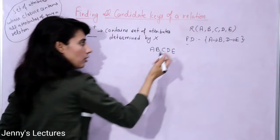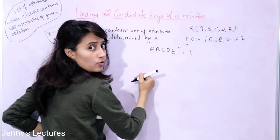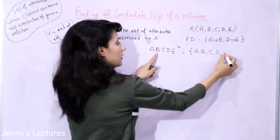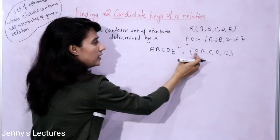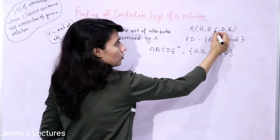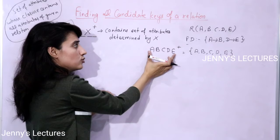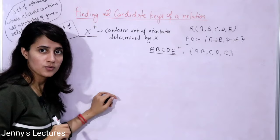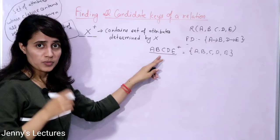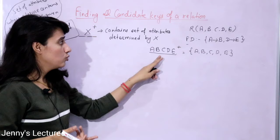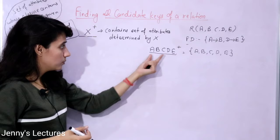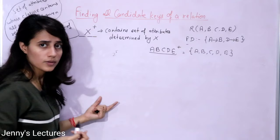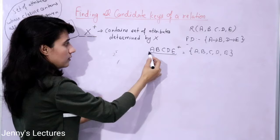The attributes are A, B, C, D, E. So ABCDE would definitely be a super key. You can verify this by finding its closure — by reflexivity, each attribute can determine itself, so the closure contains all five attributes. However, this is not a candidate key because a candidate key is a super key whose proper subset is not a super key. Checking all proper subsets would take up to 2^5 minus 2 steps — a lengthy process.